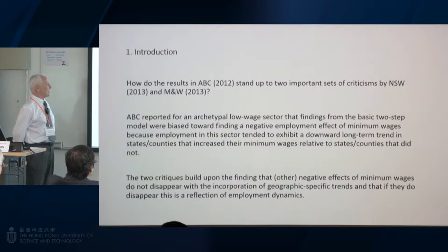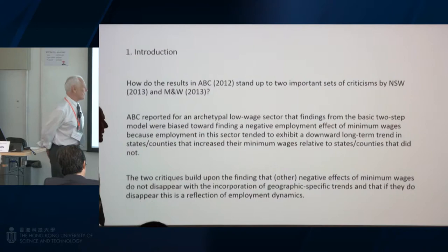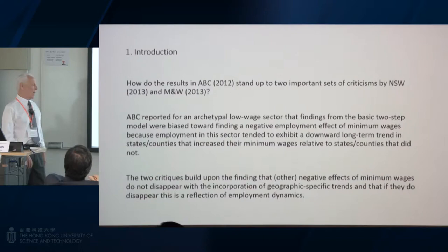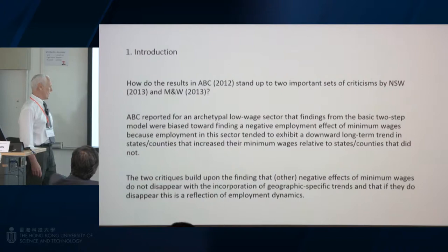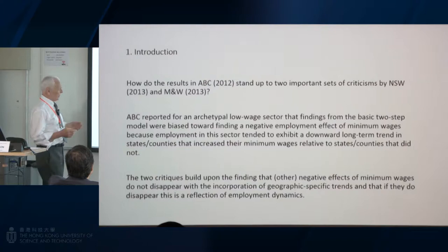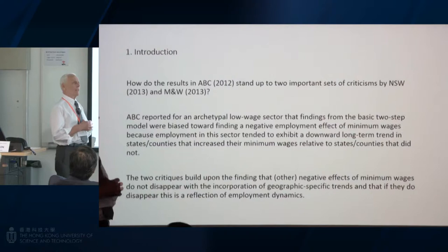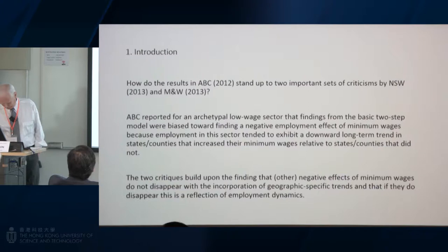So David has criticized this research, as have Meir and West. The two critiques — David's and Meir and West's — either build upon the finding that when you do allow for geographic specific linear trends, the negative effects of minimum wages do not disappear, as we report for the restaurant and bar sector. And the Meir and West argument is that if the significant minimum wage effects do disappear, it's because of employment dynamics.